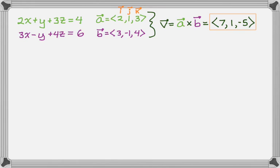Okay, so I'm going to box that because that's the direction vector. So that's kind of like a sub-step that I needed. And now I'm going to go ahead and find the point. So I'm going to let z equal 0. And that gives me 2x plus y equals 4 from the first plane. And 3x minus y equals 6 from the second plane.